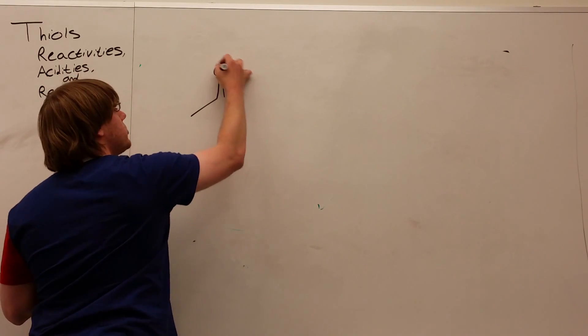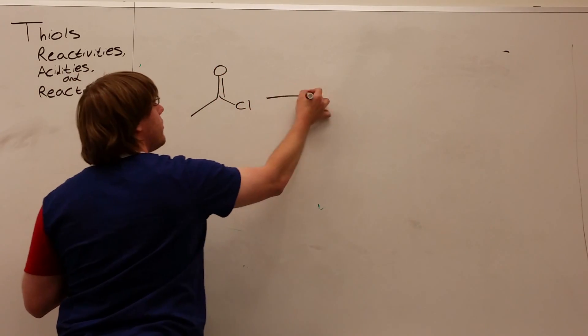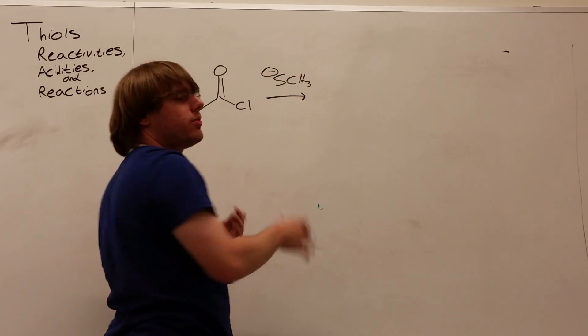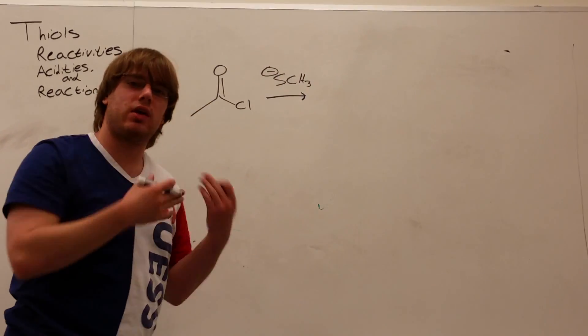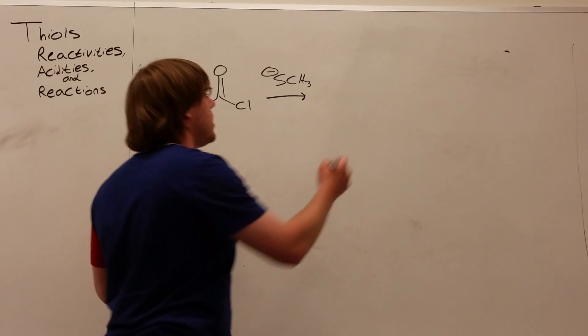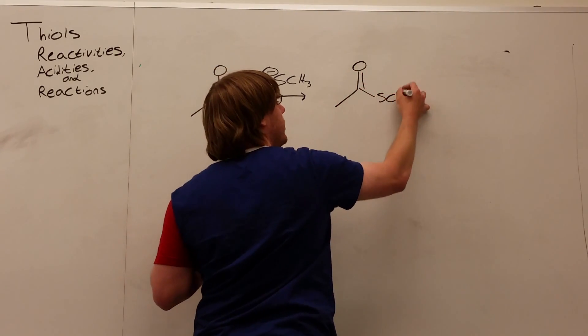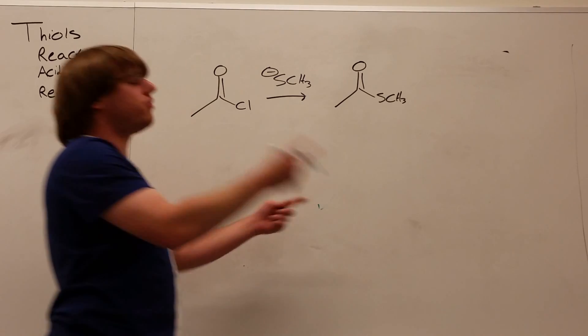Let's start with the one we already saw, the acyl chloride reacting with SCH3 minus. Well, this should come as no surprise. The chlorine is going to get replaced by this SCH3. And so, we should expect this to be exactly what we get, and it is. But let's try and reverse this now.